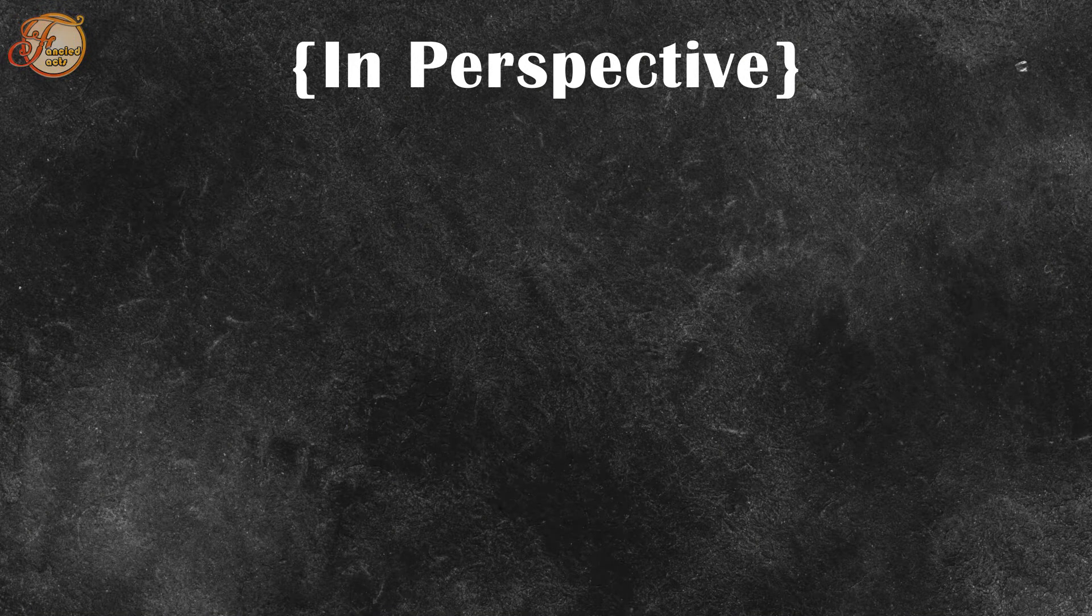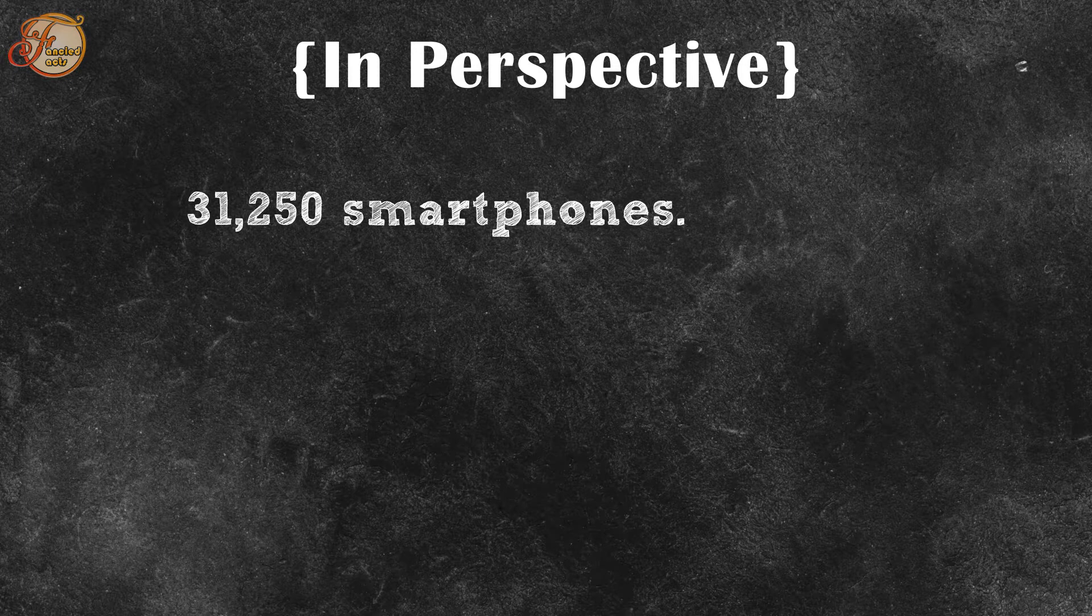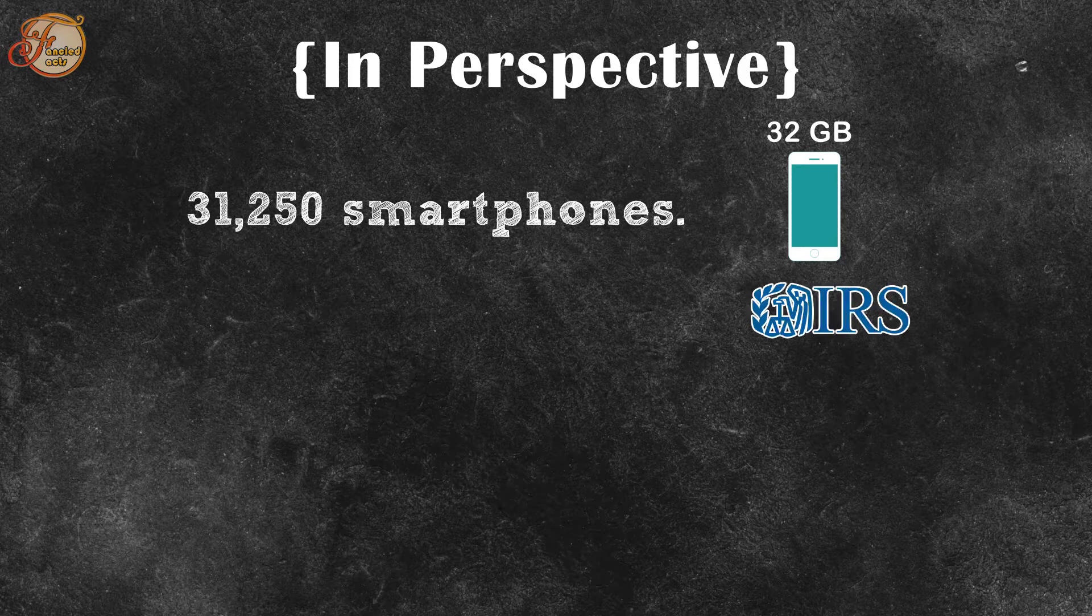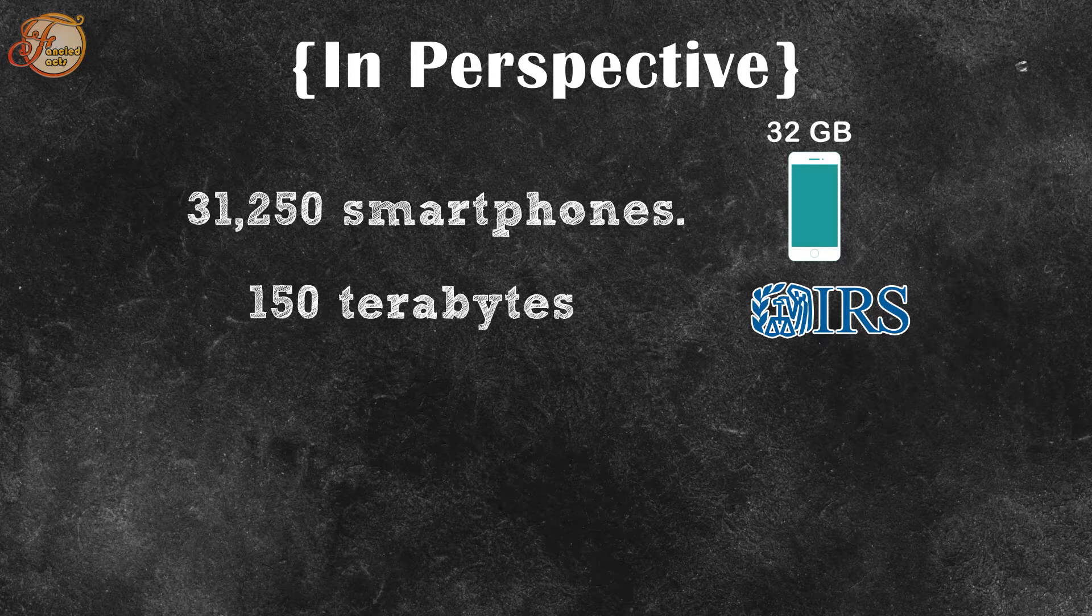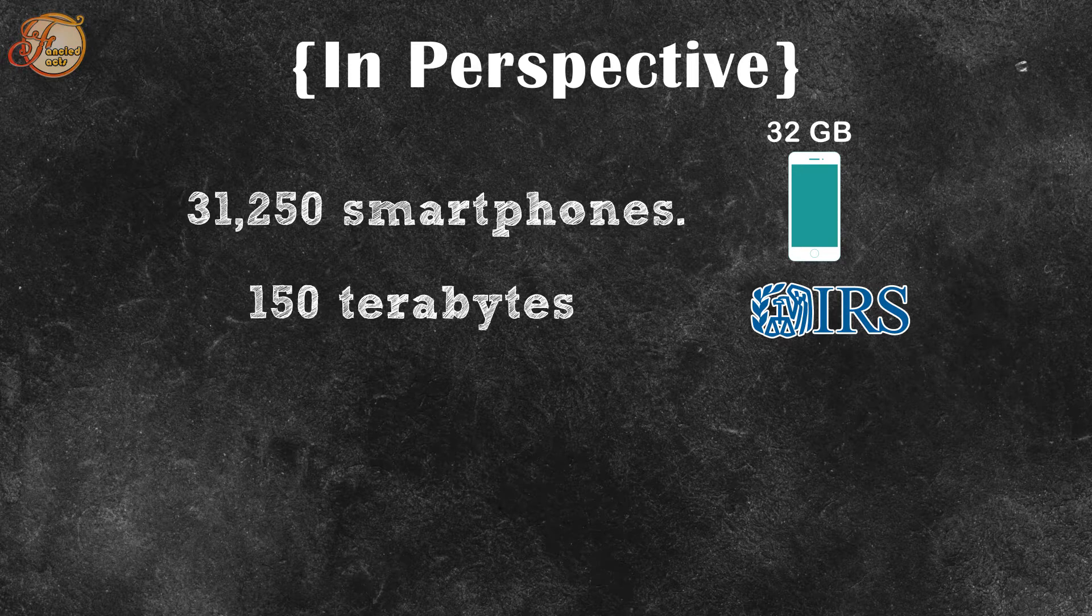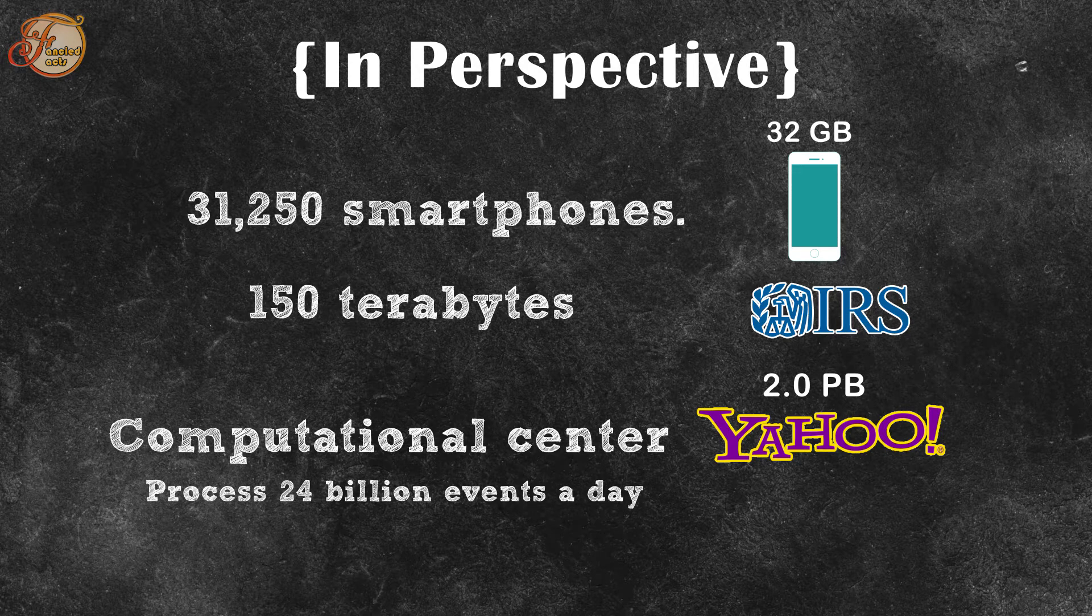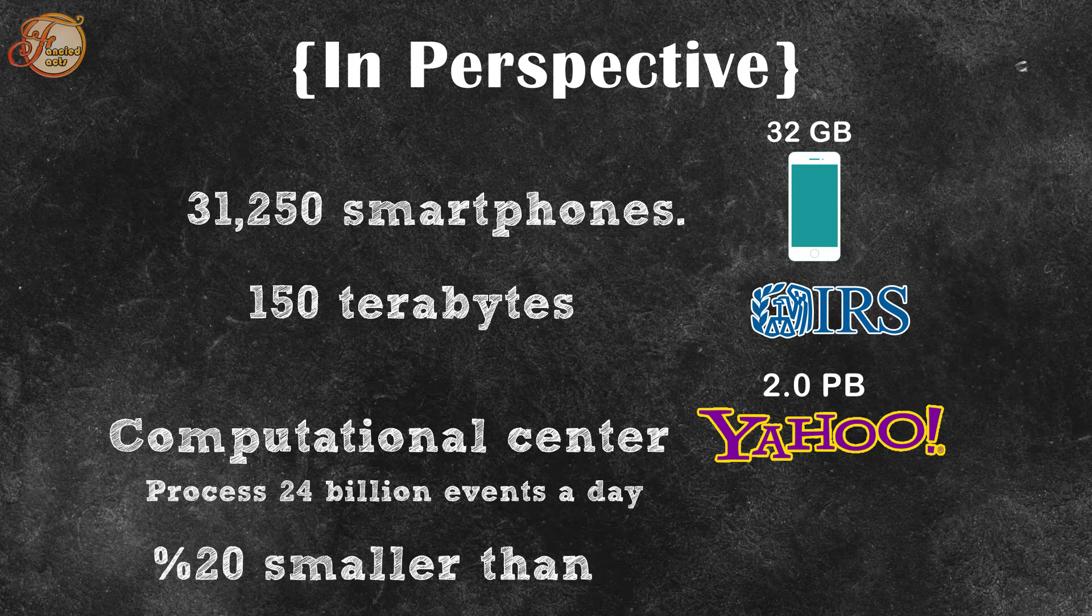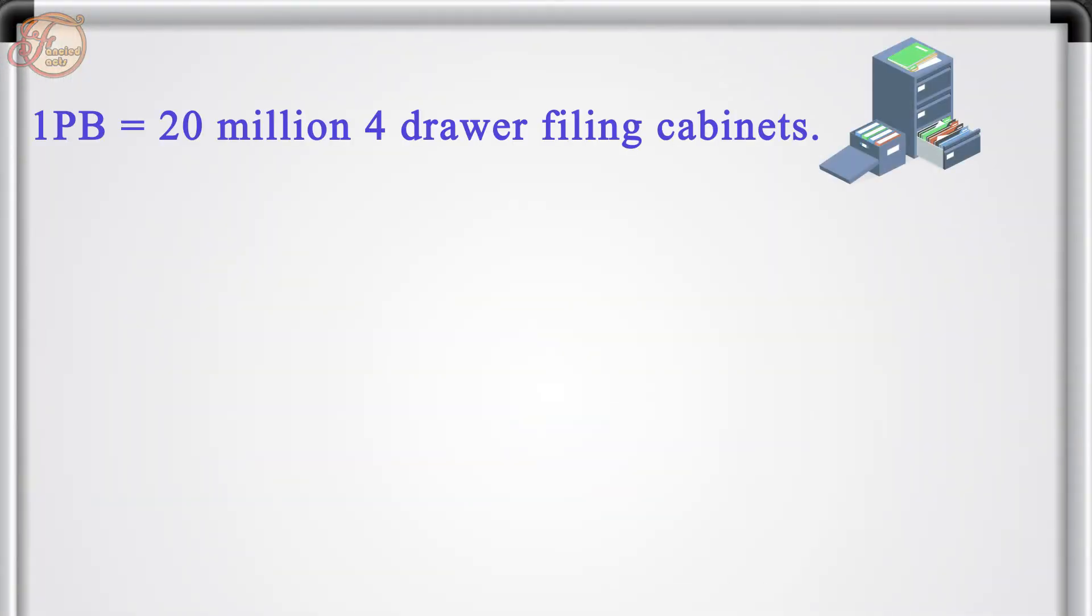In perspective, the average adult memory capacity is the equivalent of roughly 31,250 smartphones with 32 gigabyte memory. For instance, the IRS has an enormous data warehouse which keeps track of 327-plus million Americans and many more million businesses, and has the capacity of 150 terabytes of memory. Yet, Yahoo's 2.0 petabyte computational center, which can process 24 billion events a day, is a full 20% smaller than the capacity of a single human brain.